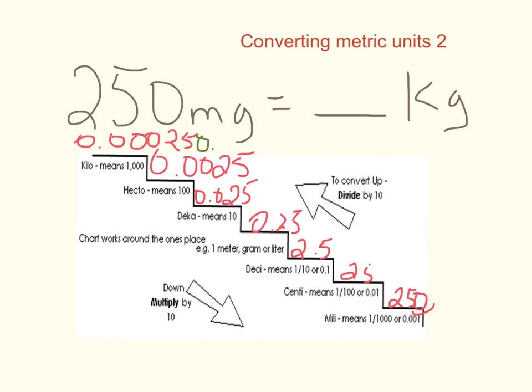our decimal one, two, three, four, five, six places, meaning six steps up, six places to the left. If we went the other way, it would be six steps to the right. So this is 0.00025 kilograms, pretty small.